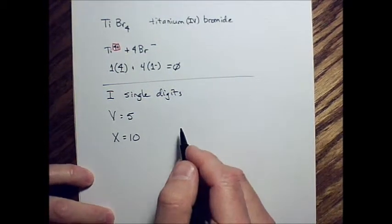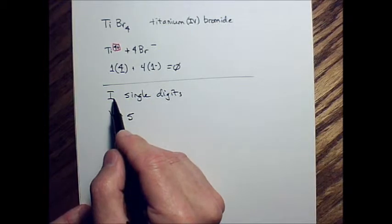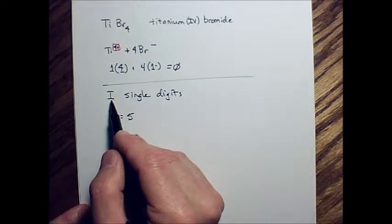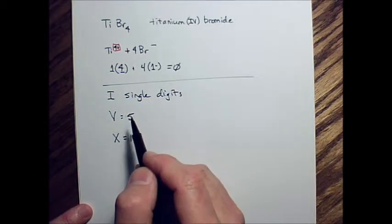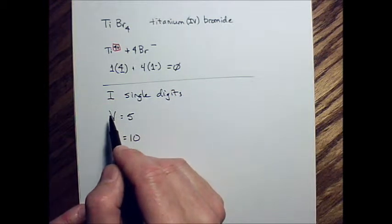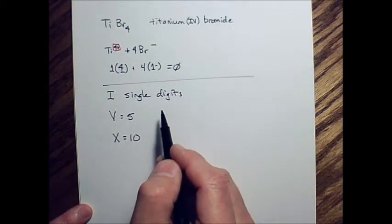I'm getting to that. Okay. If you put a smaller digit letter in front of a larger digit letter, you subtract. If you put a smaller digit letter in front of a larger number, you add.